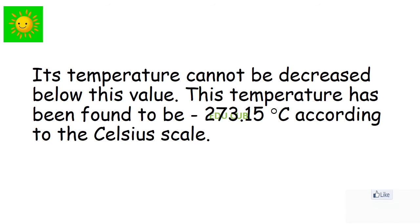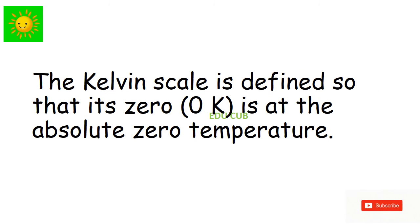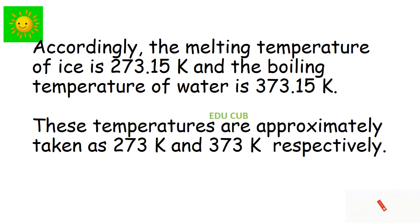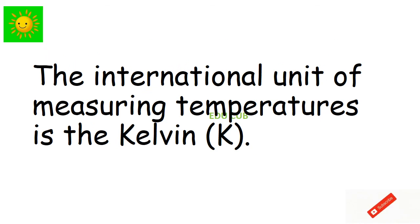This temperature has been found to be -273.15°C according to the Celsius scale. The Kelvin scale is defined so that its zero is at the absolute zero temperature. However, in this scale, temperature difference equal to 1 Kelvin is chosen to be equal to the temperature difference of 1 Celsius. Accordingly, the melting temperature of ice is 273.15 K and the boiling temperature of water is 373.15 K. These temperatures are approximately taken as 273 K and 373 K respectively. The international unit of measuring temperature is the Kelvin.